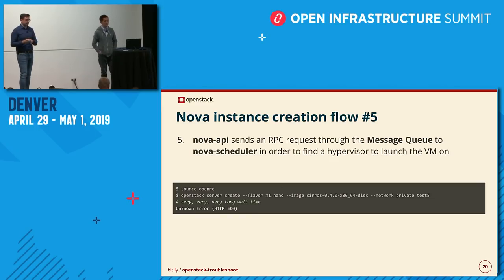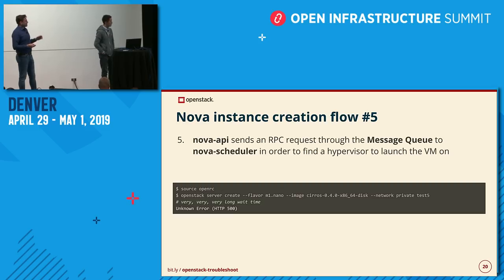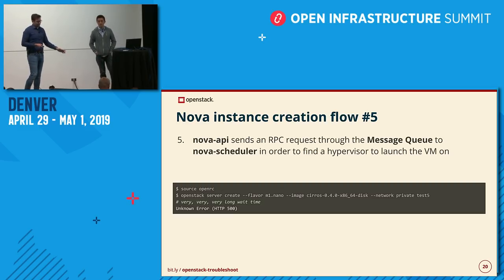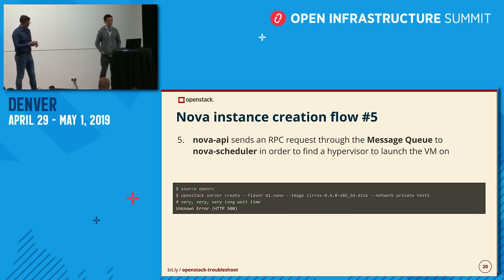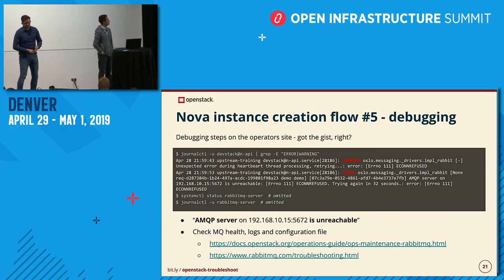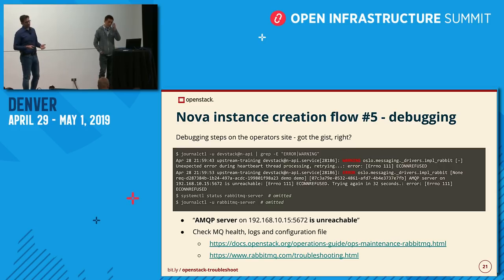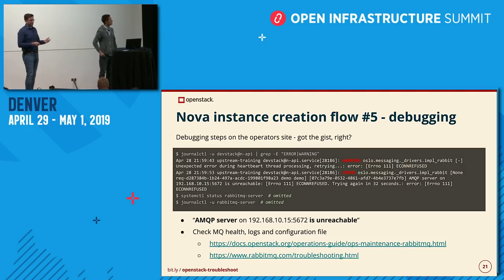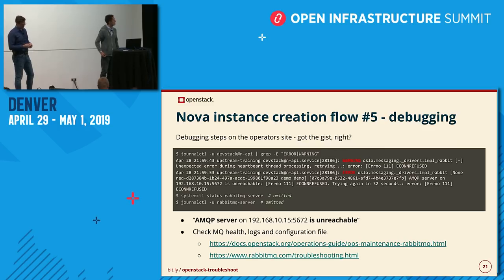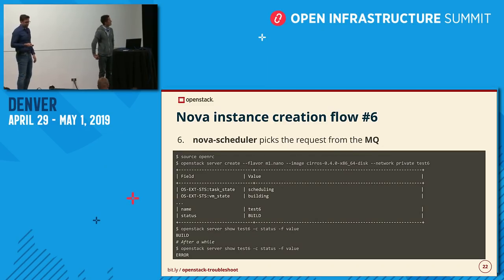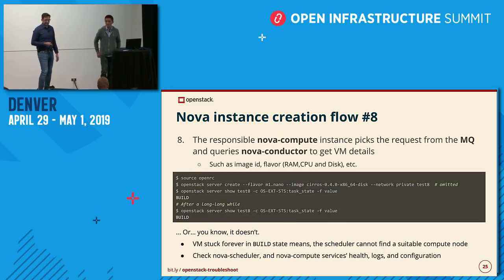As a last step in this presentation: it's not just the database — the message queue can also have a problem. This time it will take a very long time to time out, and you'll get an 'unknown error 503.' Go to the server, grep for errors and warnings, and it will tell you that the AMQP server on that address is unreachable. Check with systemd whether the MQ is up; if it's up, review your configuration options or go to the RabbitMQ troubleshooting guide.